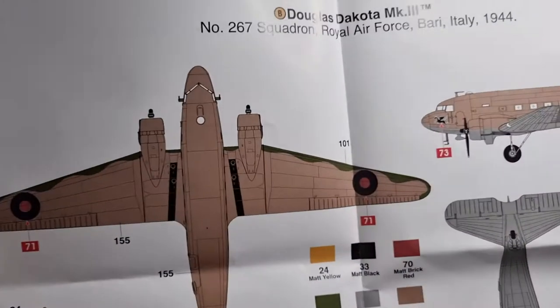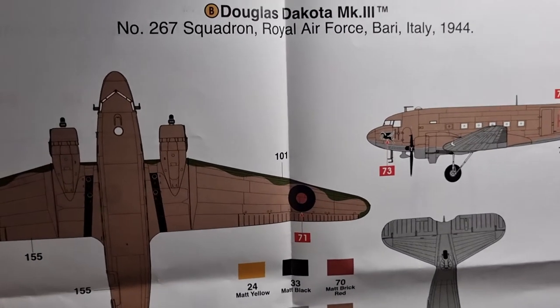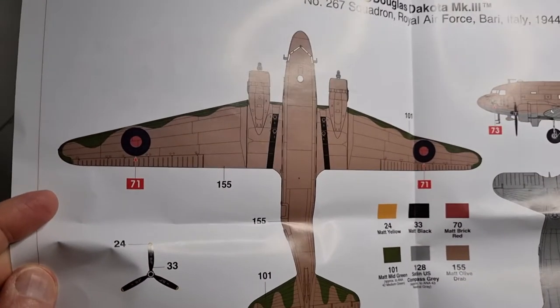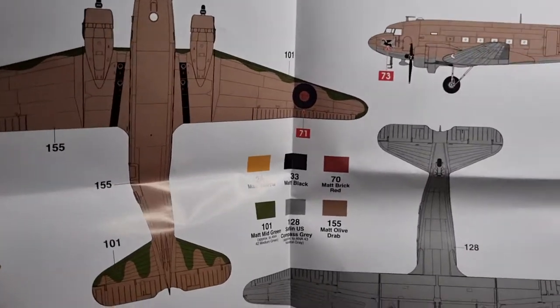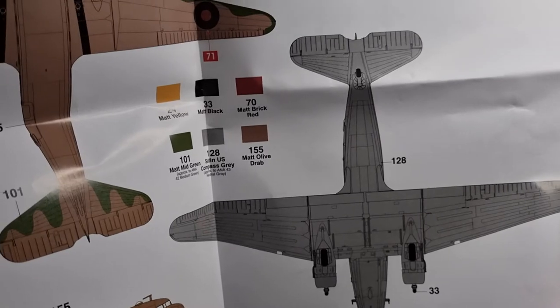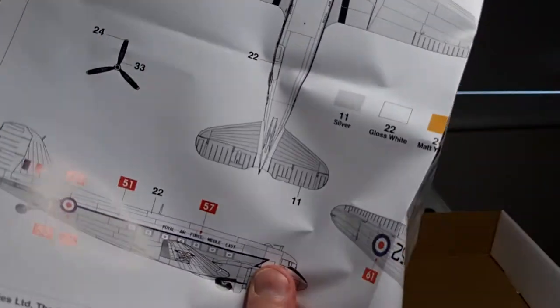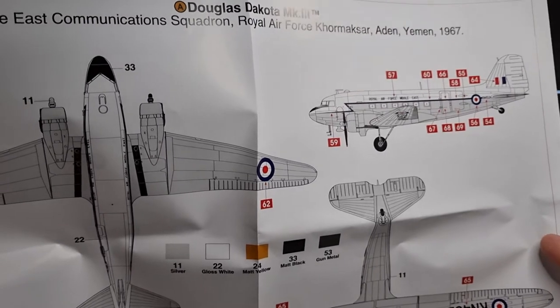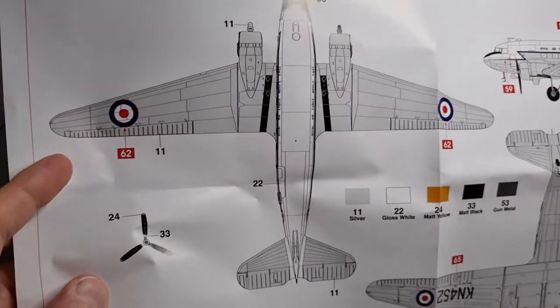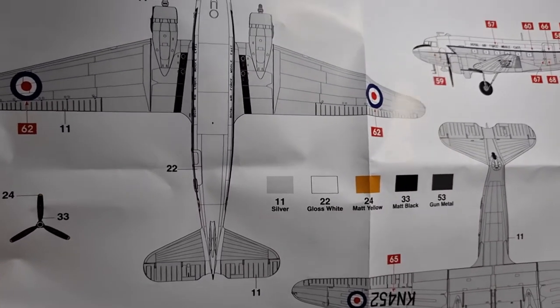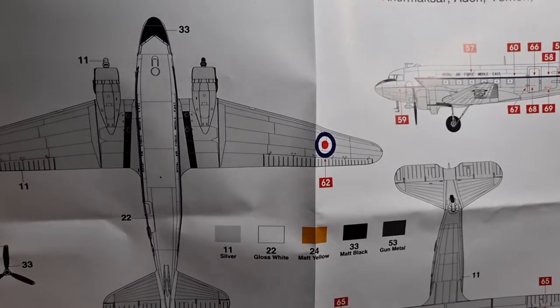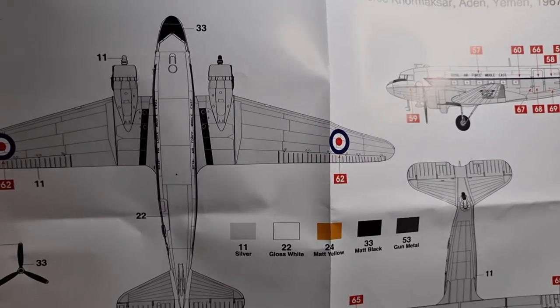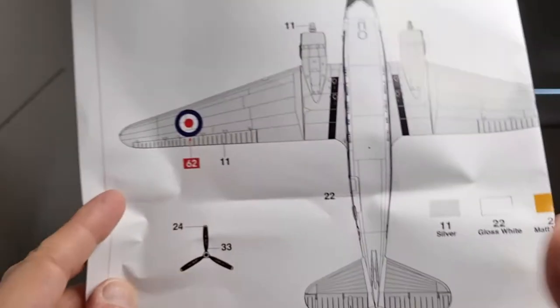Then you've got your color callout sheet which is nicely printed in color. The first option is a Dakota Mark III 267 Squadron, RAF Italy 1944, with matte light olive on top, mid green, and undercolor of RAF mid-compass gray. The other option, which I'm more likely to do, is the Middle East Communication Squadron RAF Khormaksar, Aden, Yemen 1967 - white and silver. I'm not sure if the cheat line you're going to have to paint yourself or whether it comes with a decal, so that's going to be quite a challenge if that's the case. But it's a lovely color scheme.